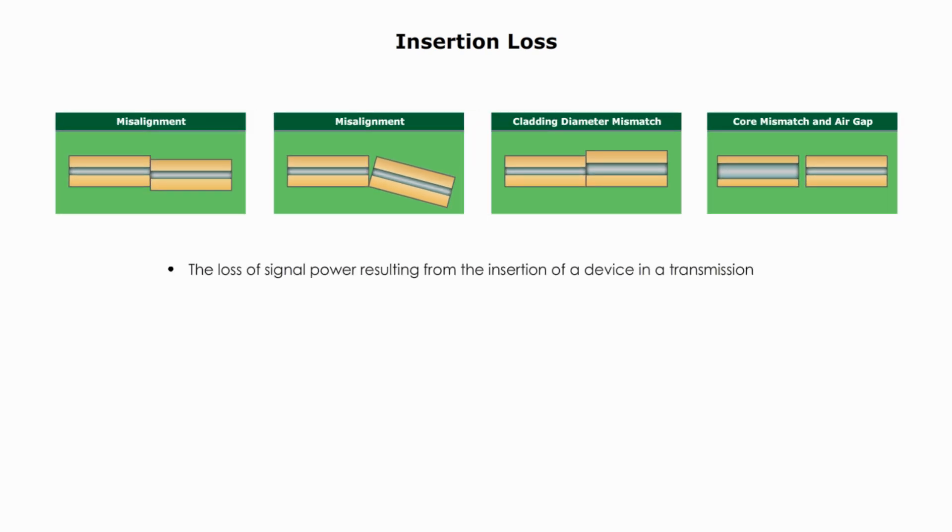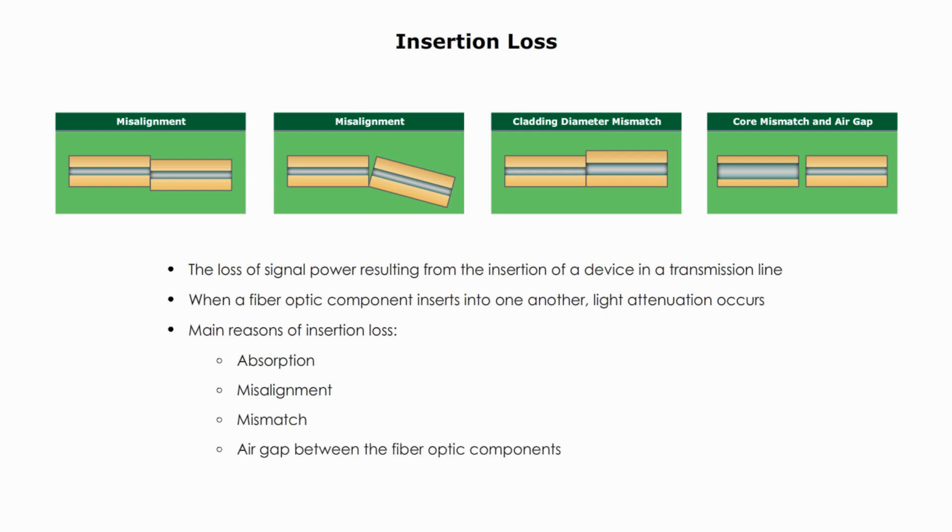Insertion loss is the loss of signal power resulting from the insertion of a device in a transmission line. In other words, when a fiber optic component inserts into one another, light attenuation or loss occurs. The main reasons of insertion loss include absorption, misalignment, mismatch, or air gap between the fiber optic components.